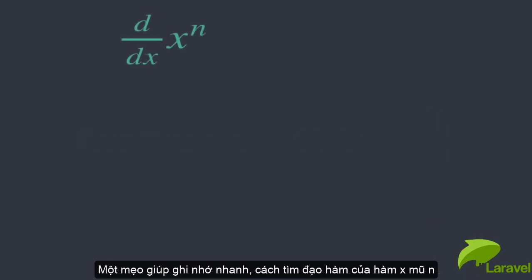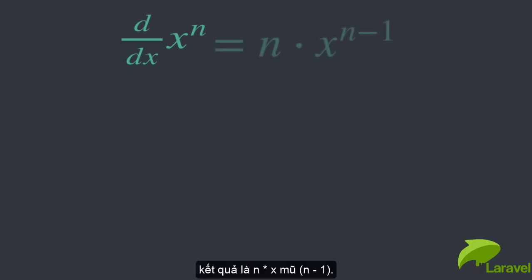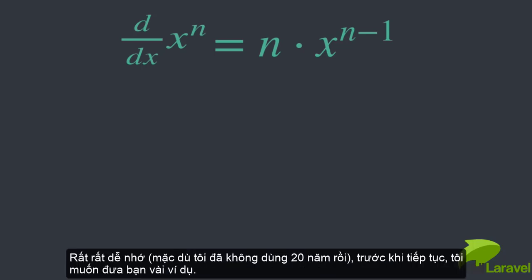If you have a function x to the power of n, then the derivative of this function is n times x to the power of n minus one. So that's a pretty simple rule, easy to remember.